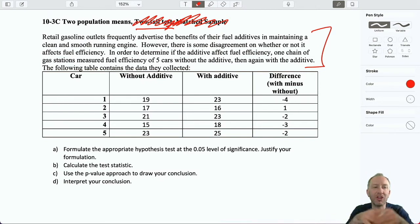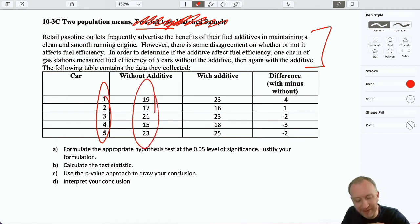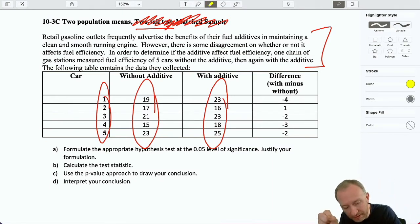Now when we look at this table of data, we can probably see fairly clearly that it's a matched sample design, right? Because when I look at this table, I can see I've got five cars. Here's their fuel efficiency without the additive. Here it is with the additive. So by just looking at the table, I can identify it as a matched sample because I have two data points for each experimental unit. So for the fourth car, I have two data points, right? And so on for each of those cars. So I can tell by looking at the sample that it's a matched sample design.